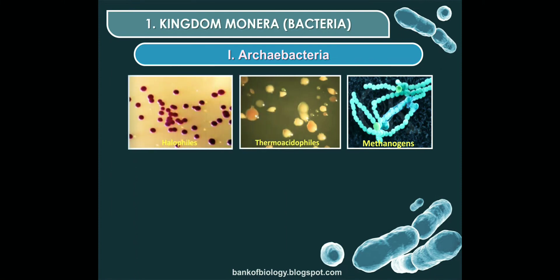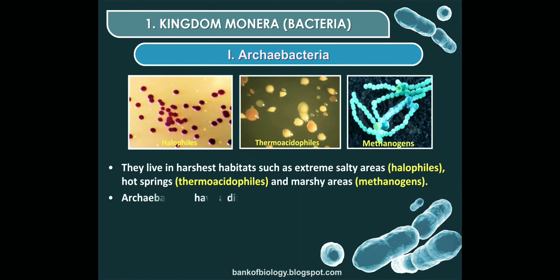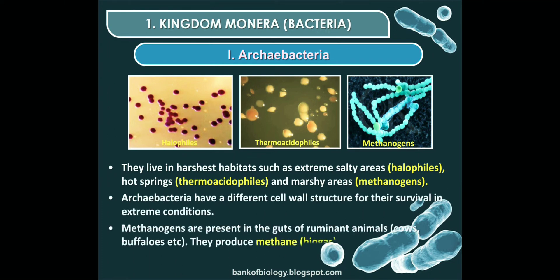Archaebacteria are classified into three groups: halophiles, thermoacidophiles, and methanogens. Halophiles live in salty water. Thermoacidophiles are acidic in nature and live at high temperatures, such as hot springs. Methanogens live in marshy areas and produce methane — for example, in the gut of ruminant animals like cows and buffaloes. Archaebacteria have a different cell wall structure that helps them survive in extreme conditions.